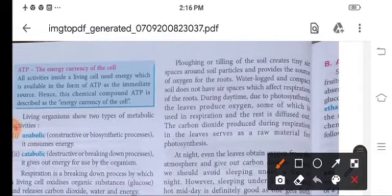You know children, you must have seen the farmers, they plow or till their soil. Why? Because plowing or tilling of the soil creates tiny air spaces in the soil particles and provides source of oxygen for the roots. Waterlogged and compact soil do not allow air spaces, which affect the respiration process of the roots. During the daytime, due to photosynthesis, the leaves produce oxygen which is utilized in respiration, and the rest of the oxygen diffuses out into the atmosphere.